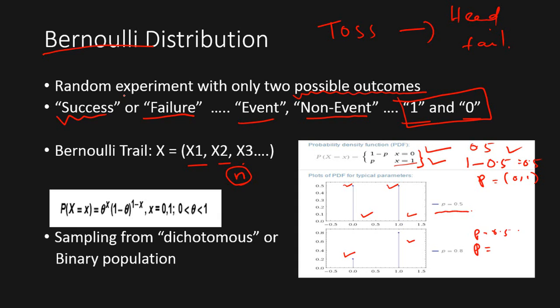Naturally, the probability associated with 0 is 1 minus 0.8, that is 0.2. And it can vary. So the only parameter in a Bernoulli distribution is the p-value, or the probability of getting success or having an event. This is the only parameter here.